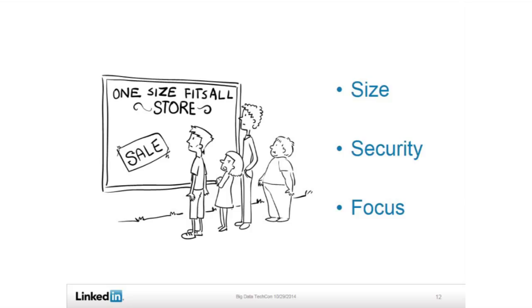There are three things: science, security, and focus. If you have 350 million members and 10 million documents only about the LinkedIn brand, plus more than 10 times what people publish on our platform, you have a scale problem. Whatever we do internally, we say this is nice, but how about at scale? Therefore, we better design our own system.